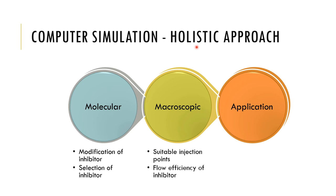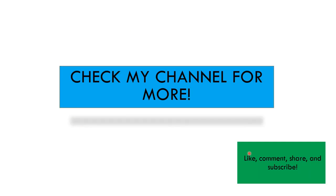Computer inhibitor simulation can work as a support to the experiments used to select inhibitors, and it also gives us a holistic approach. It can be used on a molecular level to understand what is going on at the substrate level, and then a macroscopic simulation can determine the best way to apply the inhibitor. This is all for today — I hope this information was useful. Check out my channel for more. Thank you.